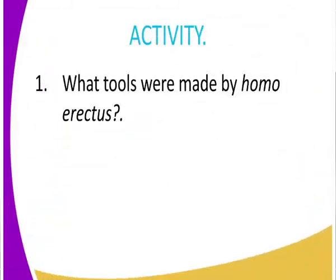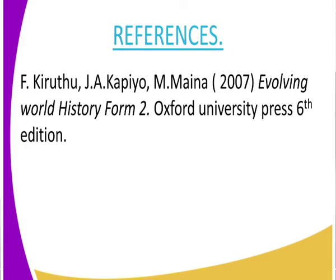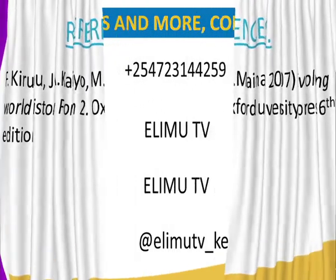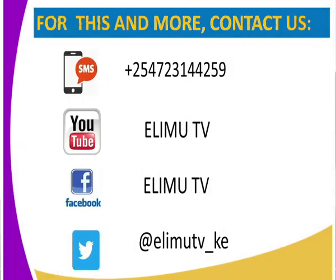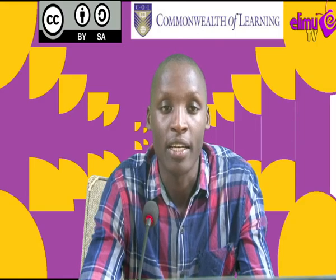Can we get to state what tools were made by Homo erectus and their uses? For example, the spears were used in hunting — can you state the work of those other tools? You can find those tools in our Evolving World History from Oxford University Press, the sixth edition. And as always, this is your favorite learning channel, AlimuTV, where you get to watch and learn. Thank you class, and let us see you in the next class.